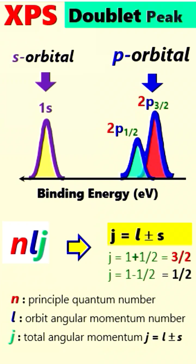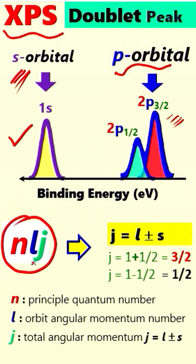If we look into the XPS spectrum, the s-orbital produces a single peak while the p-orbitals produce double peaks. This is called a doublet or spin-orbit coupling or JJ coupling. This is the common nomenclature for XPS doublet peaks.